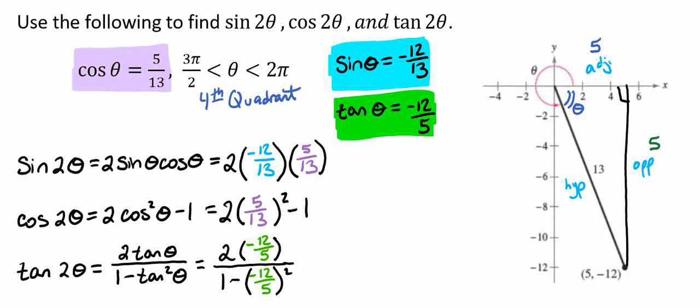All that's left to do is to plug these into our calculator to get our answer. So if we plug in 2 times negative 12 over 13 times 5 over 13, that's going to leave us with negative 120 over 169.